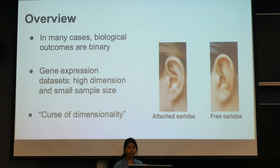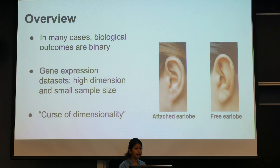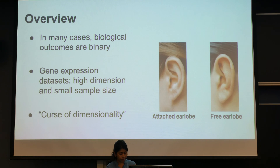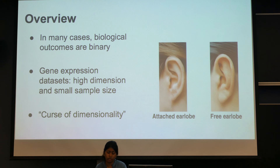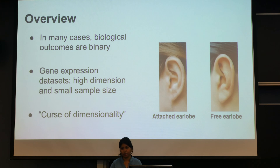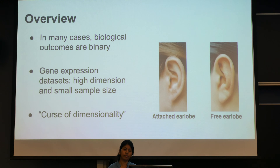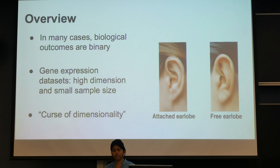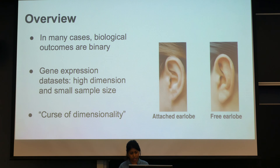In a basic overview, a lot of biological outcomes are mainly binary — like either you have this disease or not, or does the cancer have this type of prognosis or the other. One of the main problems with gene expression data is that you have very few samples compared to a very large number of features. The sample size is often in the order of hundreds, but the features can be tens of thousands, so it often suffers from the curse of dimensionality.